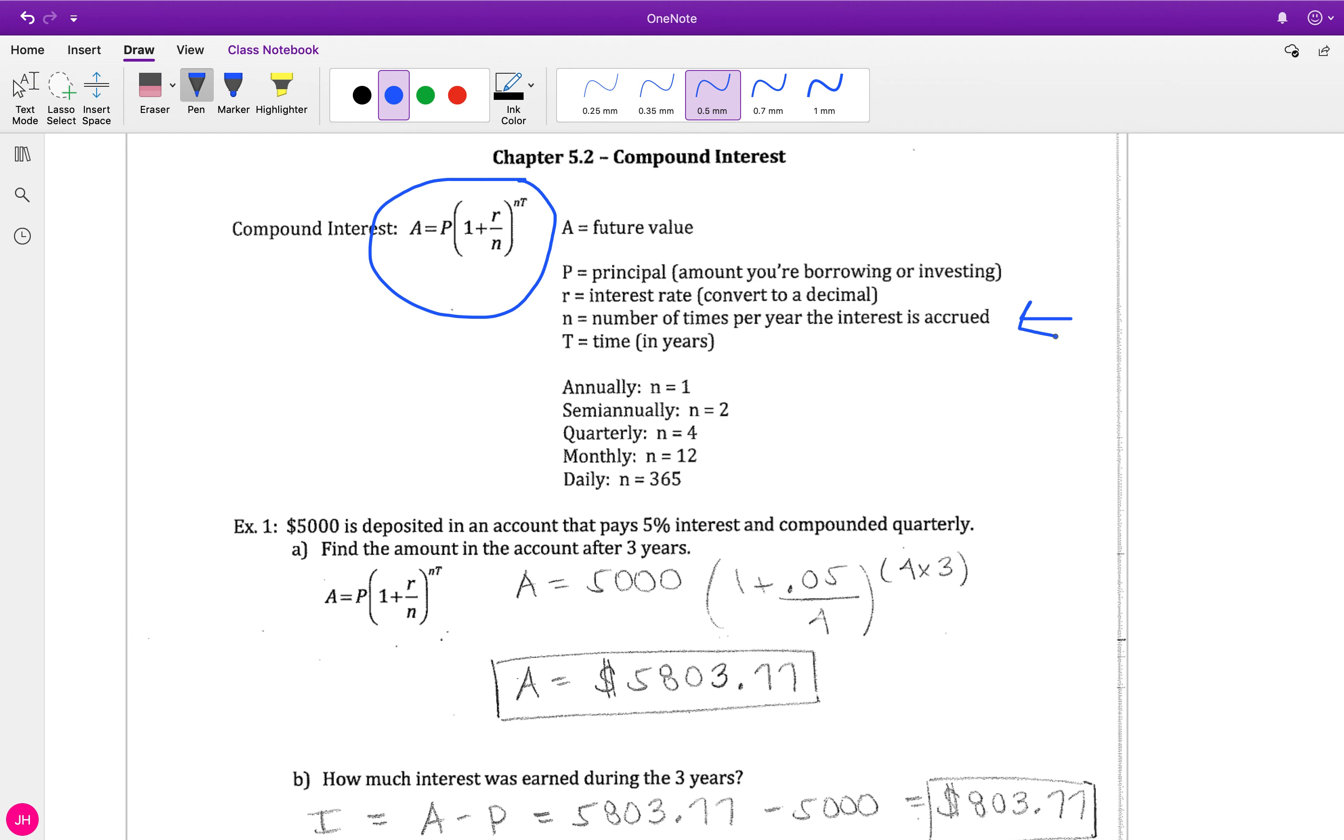N is going to come up as a word in our problem, and I've written those out down here. So we're going to see things like annually, semi-annually, quarterly, monthly, daily, and we have to turn those words into the number that goes with them. Annually means one time a year, like your anniversary. Semi-annually is two times a year.